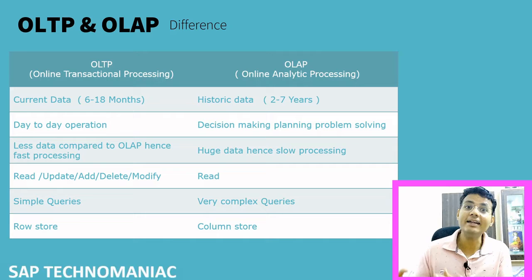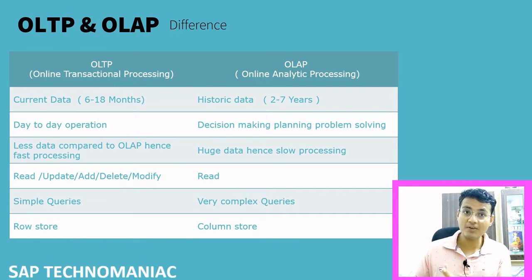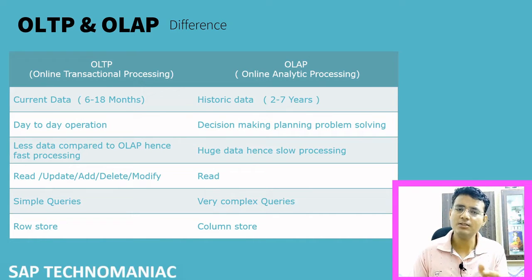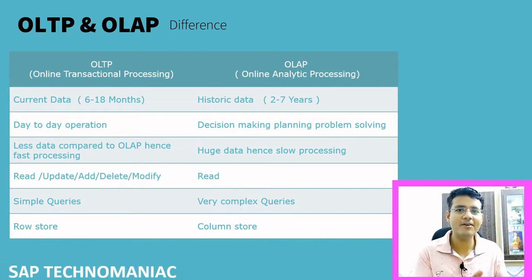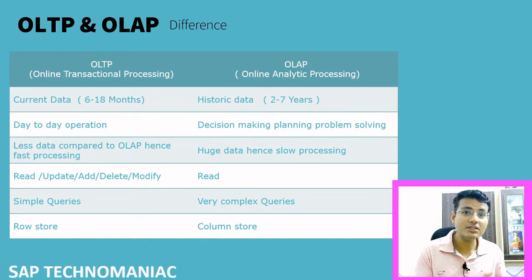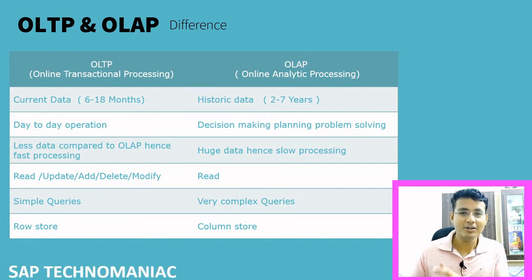This is for analyzing data. That is the reason we call it analytical processing, and it will have a huge amount of data. Based on that, they come to a conclusion. They will not modify much of that data — they just read it. OLTP has less data compared to OLAP, so the processing is fast. Since we have only two years of data, the number of records is less, so we can easily search and modify the data. But in OLAP, we are having huge historical data, so it will take time to analyze and read all the data.